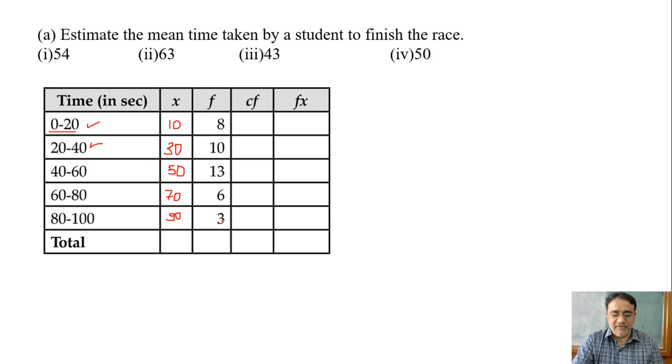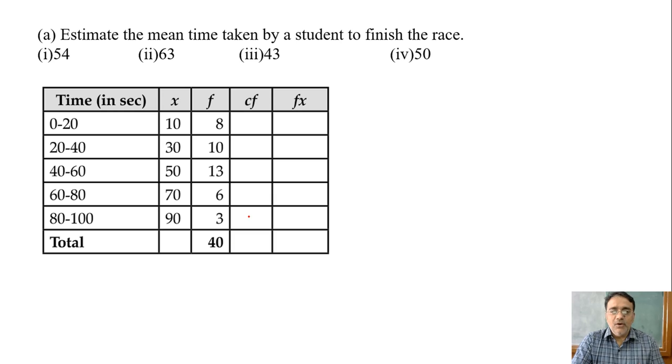After that we have to add these frequencies also. 8 plus 10 plus 13 plus 6 plus 3 equals 40. So total frequency is 40 we are getting. So now this column is not required right now. For the next question it is required.